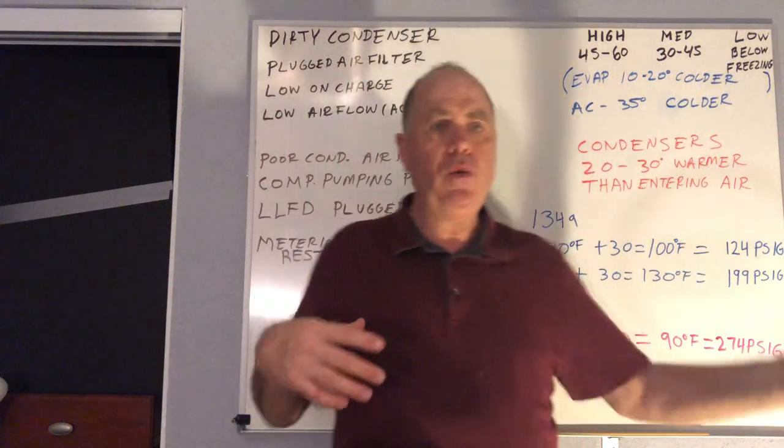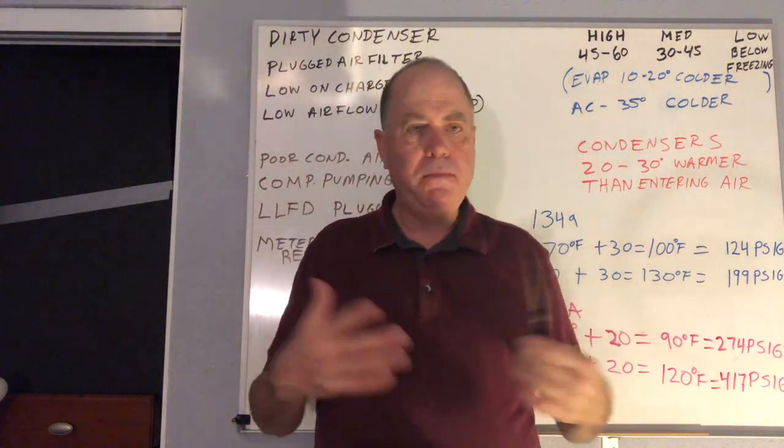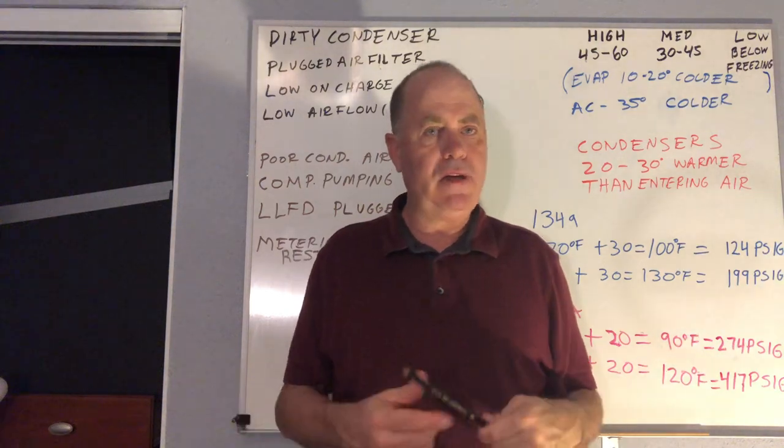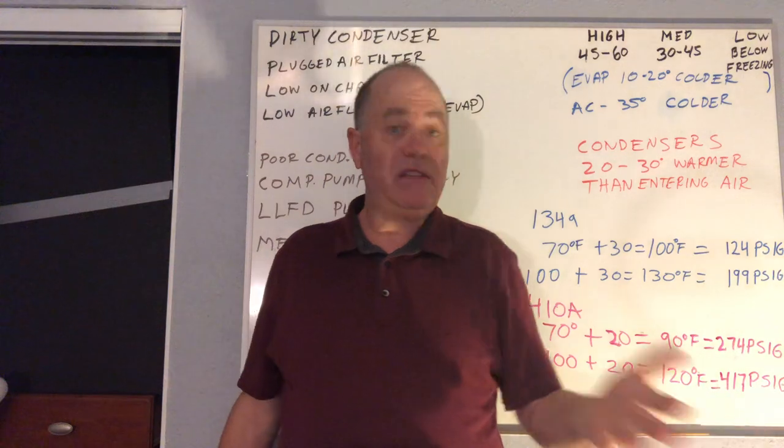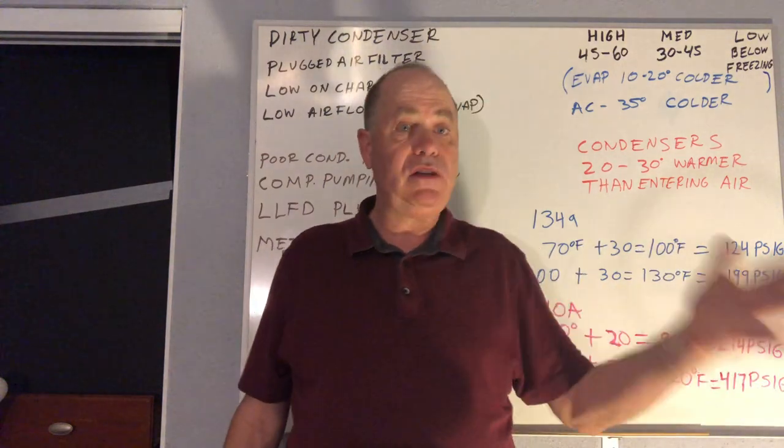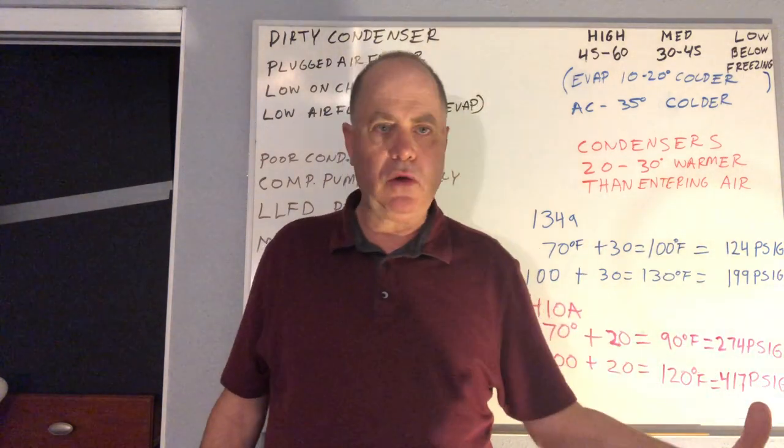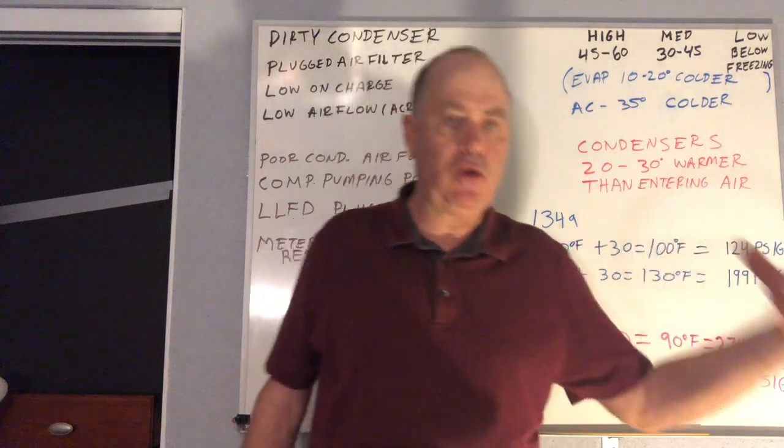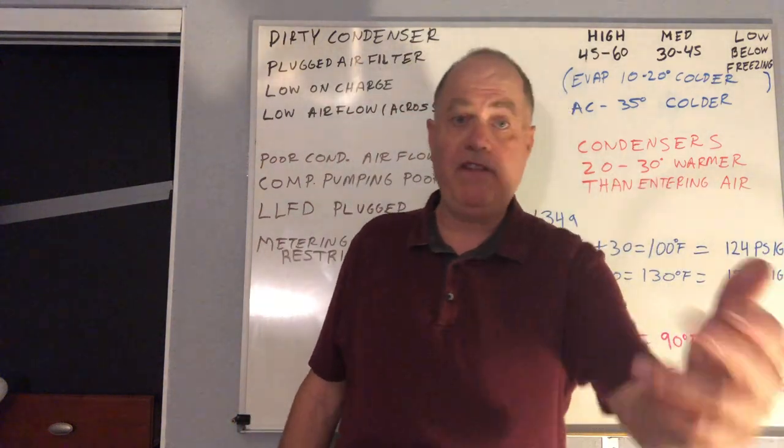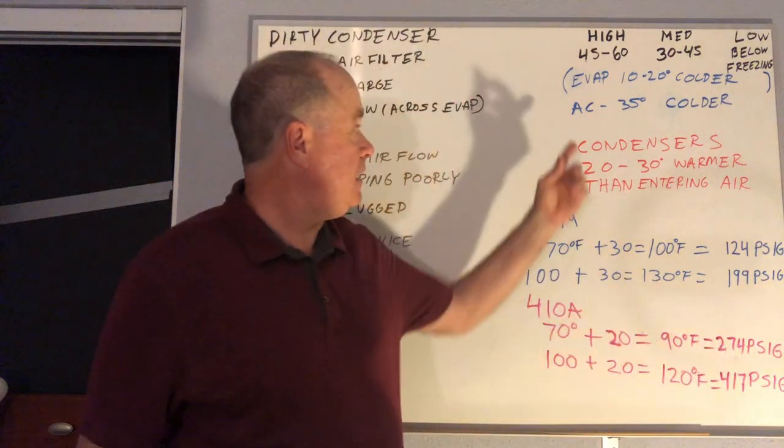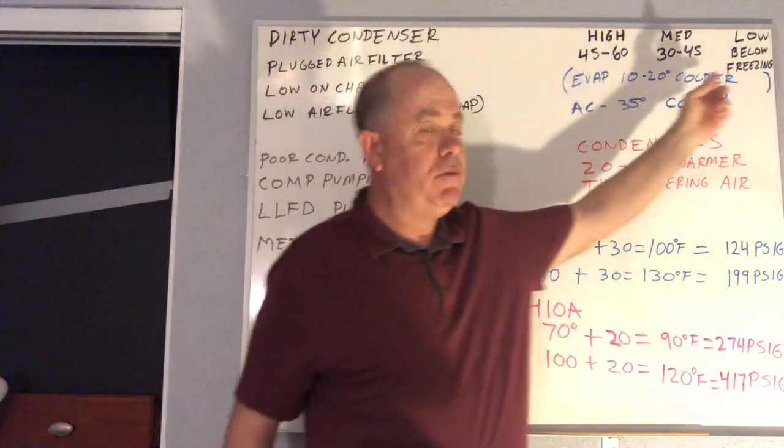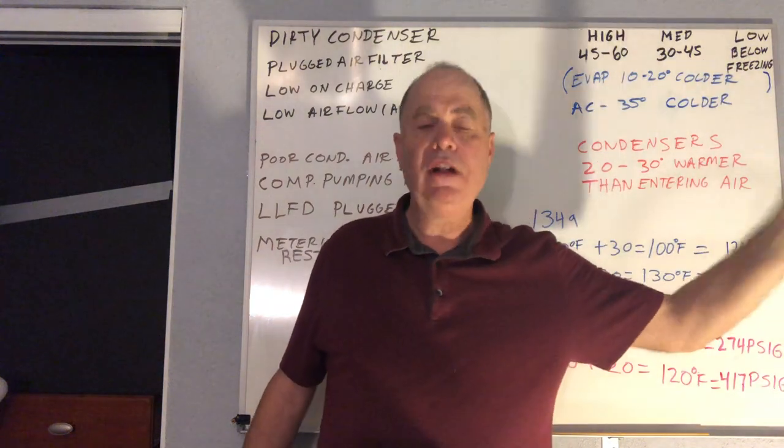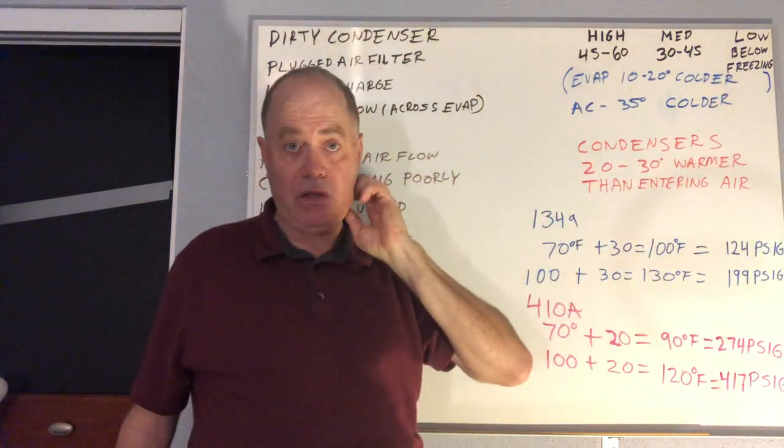And then the evaporators always have to be colder than the boxes that we're cooling. Like if you have a medium temperature box and it's 39 degrees and you're trying to drop it down to 38, 37, the only way that box gets colder is if it has something even colder to give up its heat to, which is your evaporator. And typically the evaporators for all of these high, medium, and low range somewhere between 10 to 20 degrees colder in refrigeration.